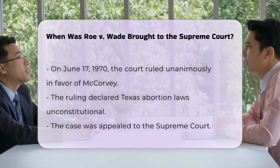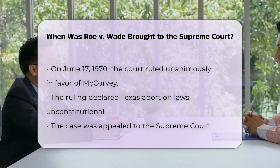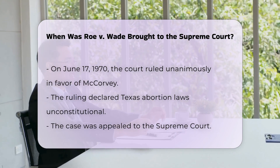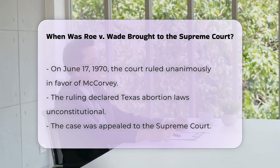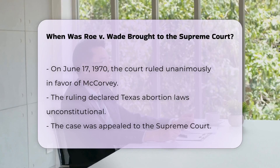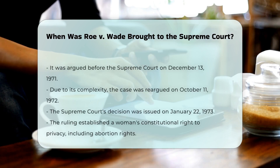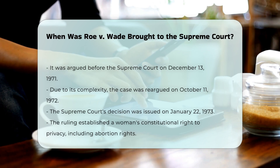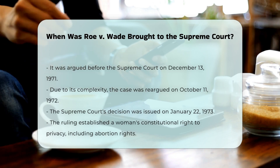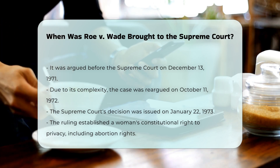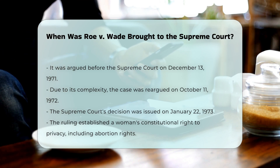Following this decision, the parties appealed the ruling to the Supreme Court. The Supreme Court agreed to hear the case, and it was argued before the court on December 13, 1971. Due to the complexity of the case, it was re-argued on October 11, 1972. The Supreme Court issued its landmark decision on January 22, 1973, ruling that unduly restrictive state regulation of abortion is unconstitutional and establishing a woman's constitutional right to privacy, which includes the right to have an abortion.